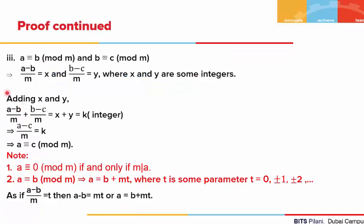For the third property, we are given a is congruent to b mod of m and b is congruent to c mod of m. Using the definition of congruence, a minus b upon m equals some integer x, and b minus c upon m equals some integer y. Adding both terms: (a minus b upon m) plus (b minus c upon m) equals x plus y, some integer k. Taking the LCM, the b terms cancel, leaving a minus c upon m equals k. From the definition of congruence, if the difference of a and c is divisible by m, then a is congruent to c mod of m.